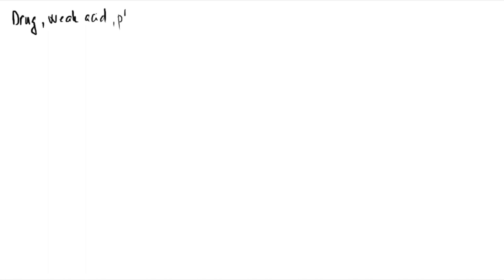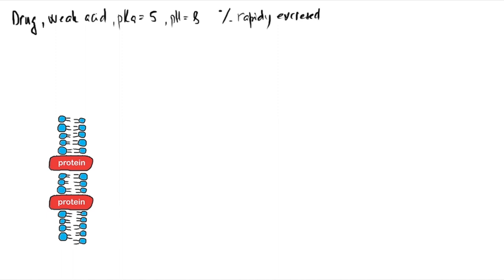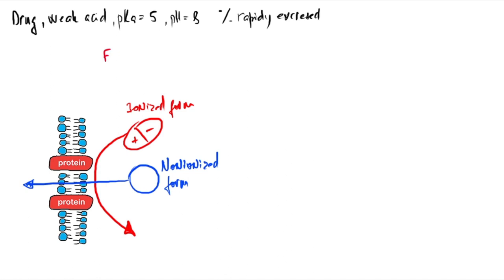Second example: a drug is a weak acid with pKa of 5.0. Assuming a pH of 8 in the urine, approximately what percentage of drug will be in a form that can be rapidly excreted? Excretion means inability to permeate through the cell membrane. Since both forms are filtered in the nephron, rapid excretion is for the ionized form, because the non-ionized form will penetrate through the membrane and be reabsorbed back. So we are looking for the ionized form.